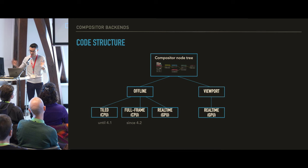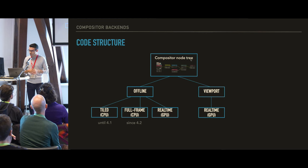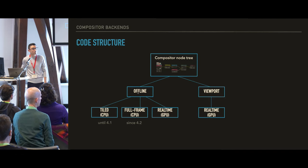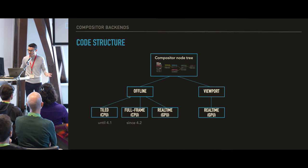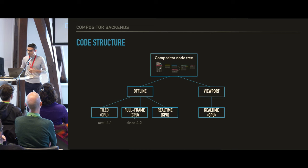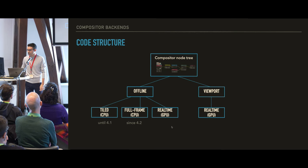I would like to first introduce the code structure — how we structure Blender now. At the very top we have the compositor node tree, which is what users see, basically the graph. With that we can either do offline compositing, or interpret that in the viewport compositor. Below those we can choose either CPU for the offline — there is the tile CPU compositor up to 4.1, and the new full-frame compositor since 4.2 — and there is also the real-time compositor which is GPU only. For the viewport, there is only GPU. Today we'll be talking about these three backends.